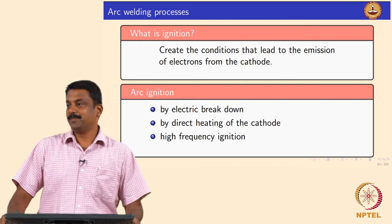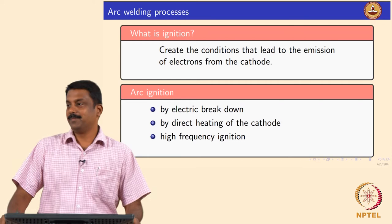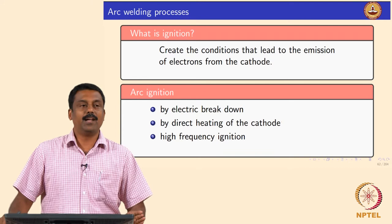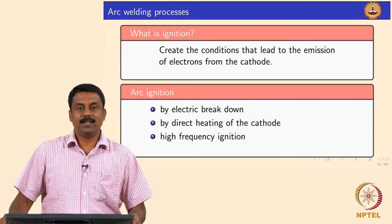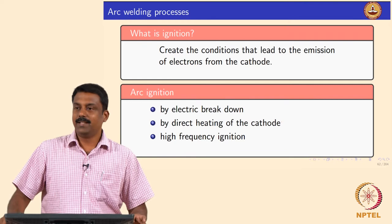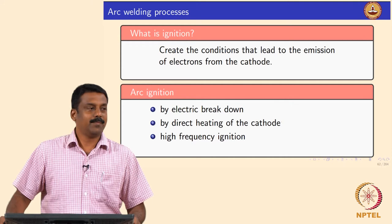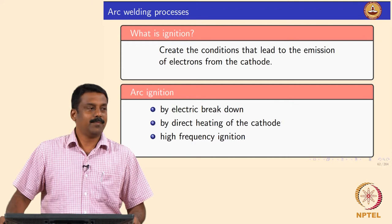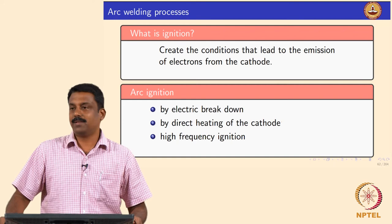He is using the second method to ignite the arc. The first method — which is a bit tricky but also widely used — is ignition by electric breakdown. Electric breakdown works on the principle that electrons are always available in the atmosphere by various methods, for example the photoelectric effect or cosmic radiation, so there will always be some electrons present.